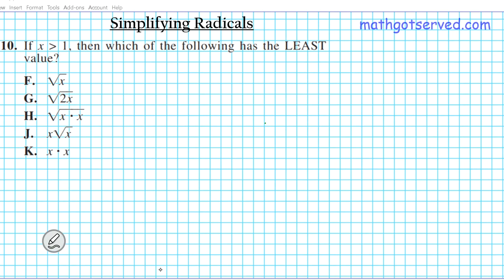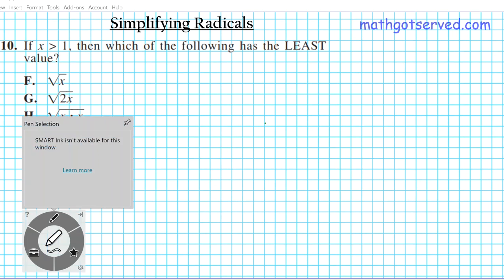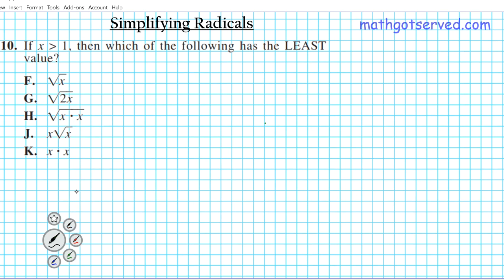All right, let's take a look at the last one in this series. So for question number 10, we're going to be looking at the properties of radicals. How do you simplify radicals? That's what we're looking at here.